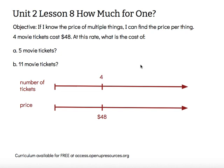I'm going to consider how much one movie ticket costs, because if I can figure that out, I can figure out how much any number of movie tickets costs. To go from four tickets to one ticket, I need to reduce that number four times — I need to divide by four. So I'm going to do the same thing with the price, divide it by four, find one-fourth of that number. So one movie ticket costs $12.